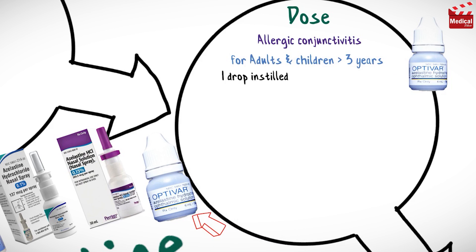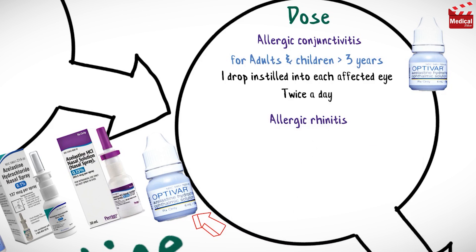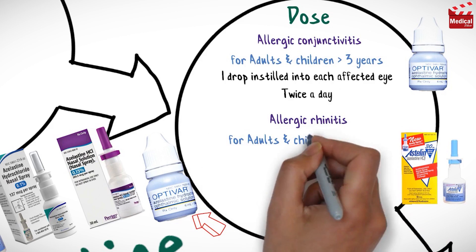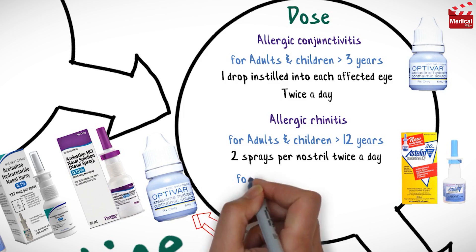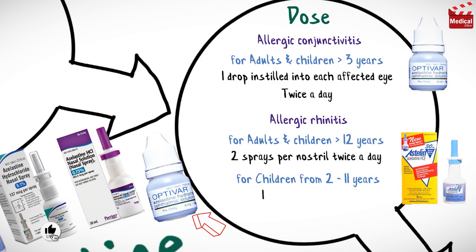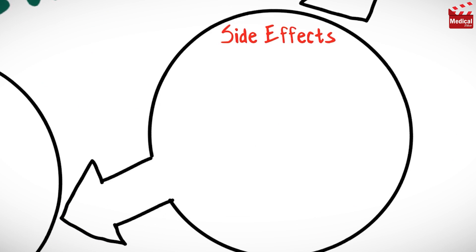The usual dose of azelastine for allergic conjunctivitis for adults and children older than three years is one drop instilled into each affected eye twice a day. For allergic rhinitis, the usual dose for adults and children older than 12 years is two sprays per nostril twice a day, and for children from 2 to 11 years the usual dose is one spray in each nostril twice a day.